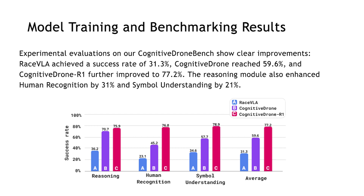With the addition of the reasoning model, the Cognitive Drone R1 system reached an overall success rate of 77%. The reasoning module not only improved overall performance, but also boosted success rates across the individual tasks.